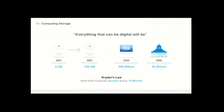You can see Kryder's Law in action with the iPod. When it was first launched in 2001, it had five gigabytes of storage. Six years later, the iPod Classic had 160 gigabytes. Projecting forward, by 2030 a regular laptop would have the ability to store one petabyte of data — that's one million gigabytes, equivalent to ten times all the books in the Library of Congress, or about 300 million books on your laptop. The challenge is not so much to store all this information, but to filter it and make that bridge between information and knowledge.